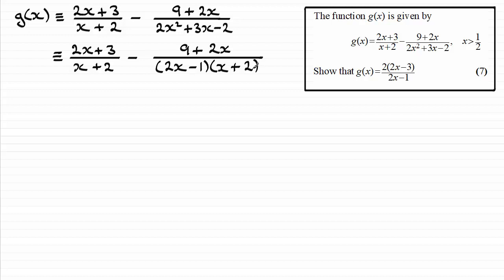Now we should aim to put it over a lowest common multiple. And I can see that we've got an x plus 2 here, an x plus 2 here. I need a 2x minus 1. So that means multiplying top and bottom of this fraction by 2x minus 1.